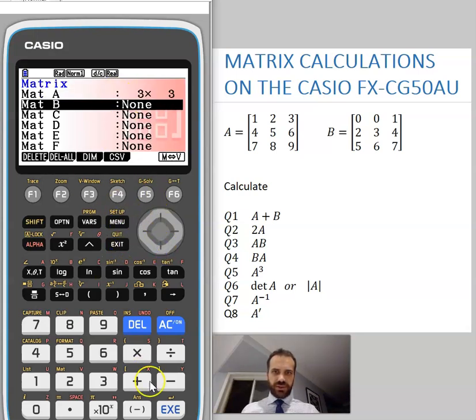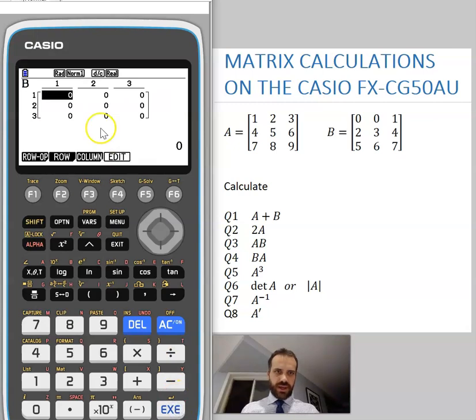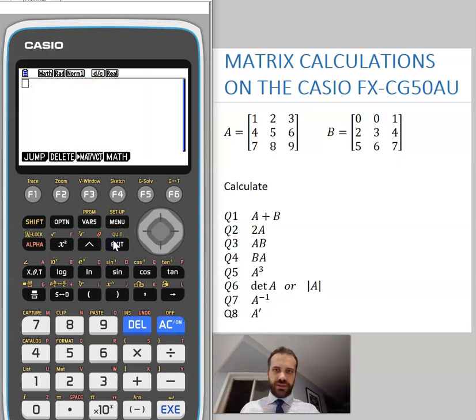Matrix B, I'm going to do the same. Another 3x3, and fill in our numbers there. And we're done, and we can exit out of that. We'll just get out of that window altogether now.